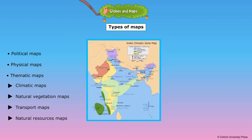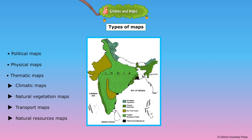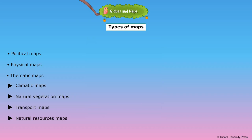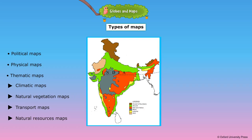Thematic maps give various details, some of which are as follows. Climatic maps show climatic conditions, such as rainfall, temperature and wind pressure of a place. Natural vegetation maps show forests, grasslands and crops grown in a region. Transport maps show roads, railways, sea routes and airline routes. Natural resources maps show the minerals and other natural resources found in a place.